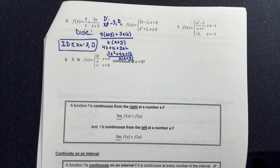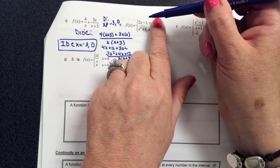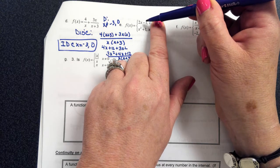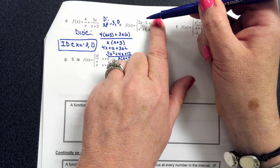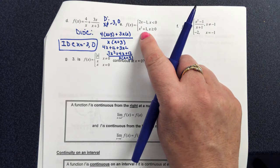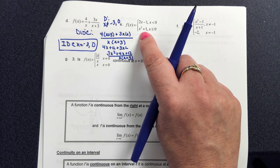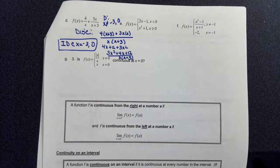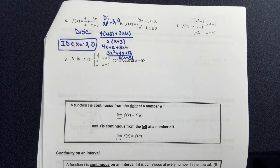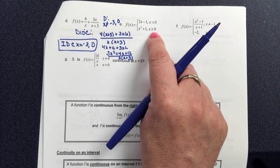For piecewise functions, look at each piece individually. For example, 2x - 1 by itself is just a line — no holes or asymptotes. And x² + 1 by itself has no holes or jumps. So if discontinuity is going to occur in this piecewise function, it will happen where the domain is restricted between the two pieces. We need to check for discontinuity at x = 0.